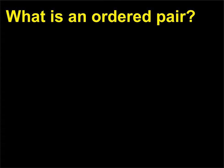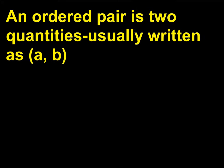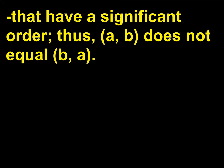What is an ordered pair? An ordered pair is two quantities usually written as (A, B) that have a significant order; thus (A, B) does not equal (B, A).